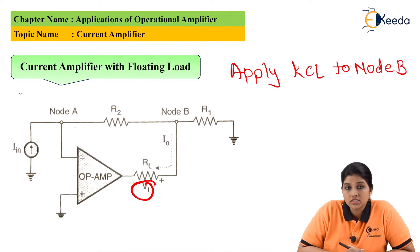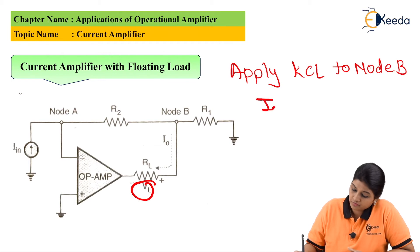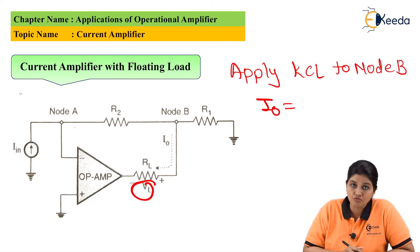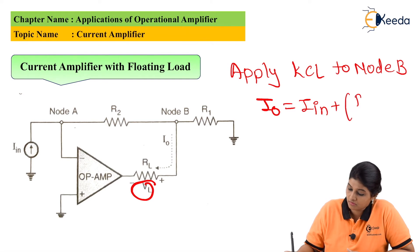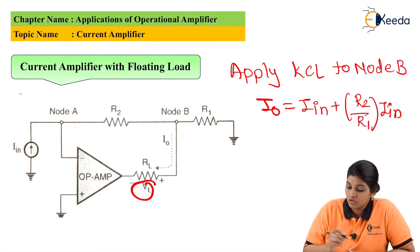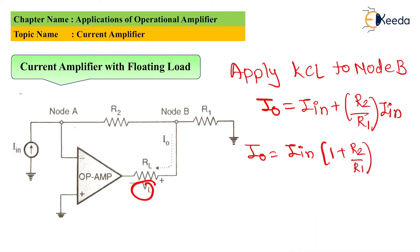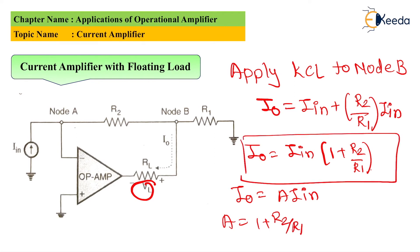When we apply KCL to node B, we get the equation: IO equals the current flowing through R2 plus the current flowing through R1. If we take the common term and compare this equation with the characteristic equation of the current amplifier, we get the expression R2 plus R2 by R1. We come to know that the value of A is nothing but 1 + R2/R1, and the equation indicates that the output current is now only dependent upon the input current and not on the voltage.